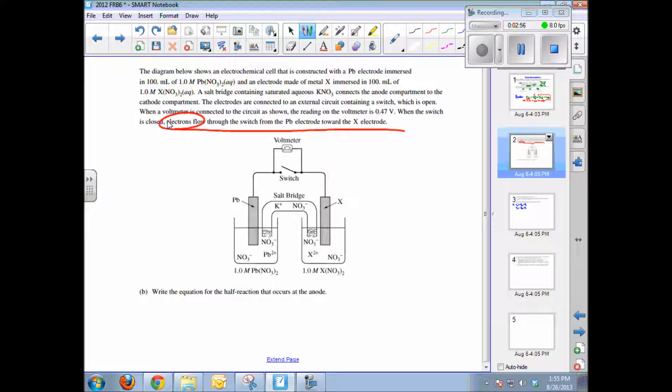So what's happening at the anode? Well, the electrons are flowing from lead to the X electrode. So oxidation is loss. Remember OIL from OIL RIG. So lead is losing the electrons here, and therefore lead is the anode. So the oxidation half reaction looks like this: lead to Pb2+ and two electrons.